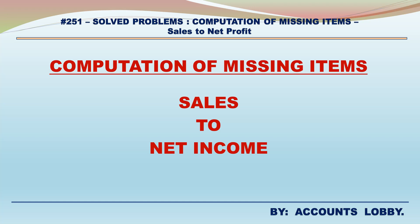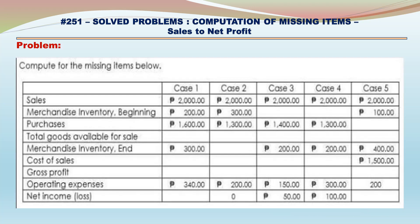Solved Problems: Computation of Missing Items — Sales to Net Income. Compute the missing items for Cases 1 through 5.